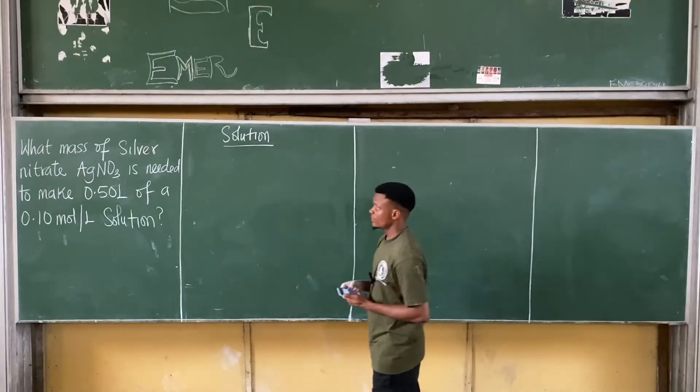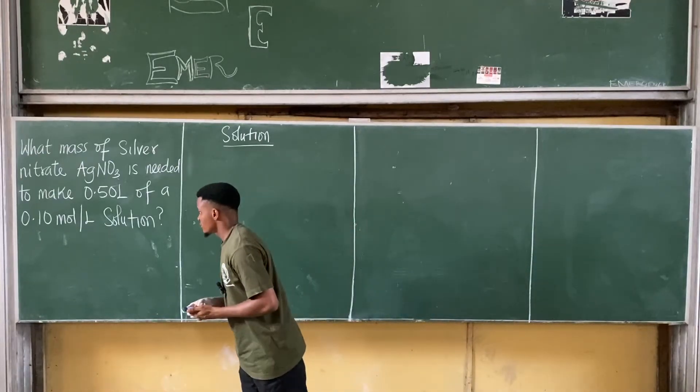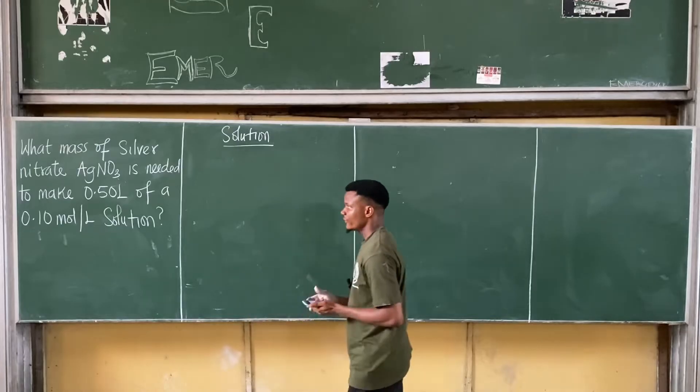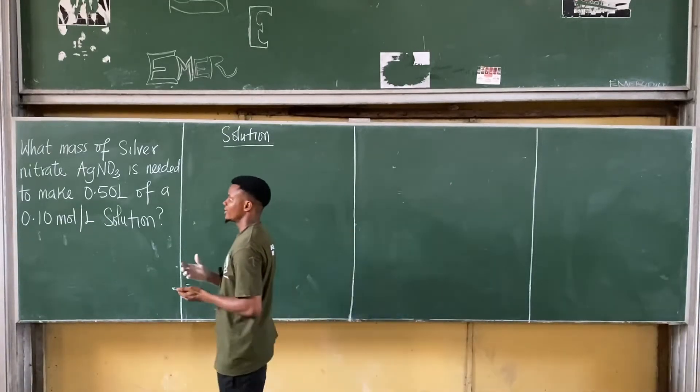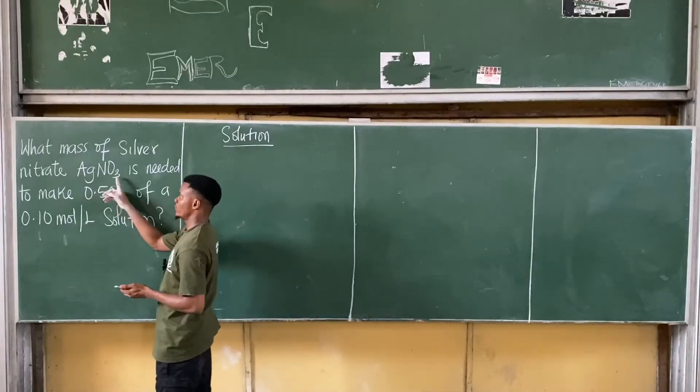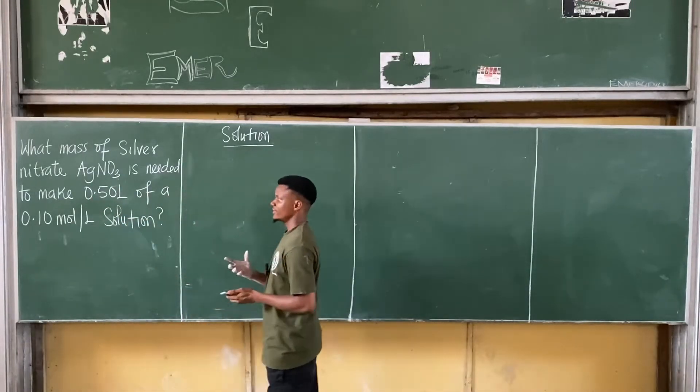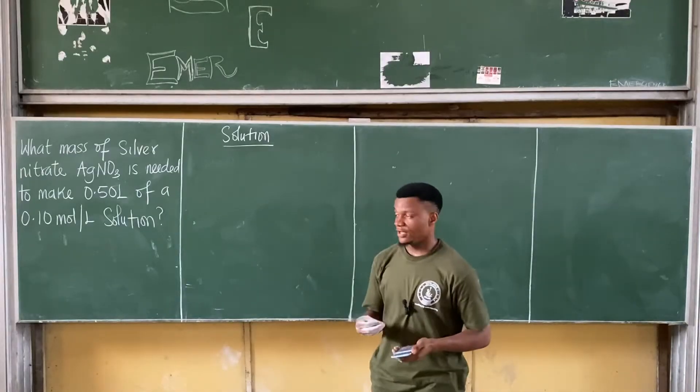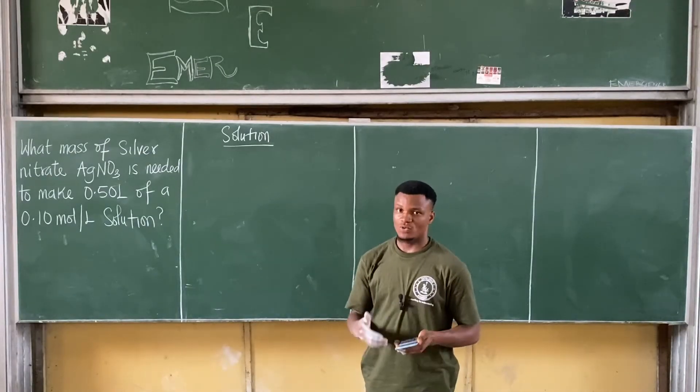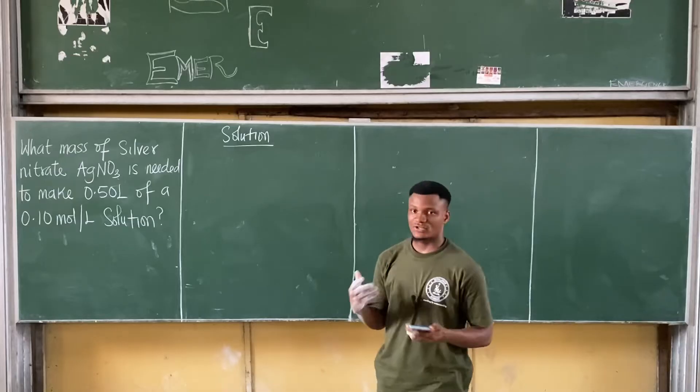Alright, let's look at this question. This question says, what mass of silver nitrate? Silver nitrate, the formula is AgNO3, is needed to make 0.50 litre of a 0.10 mole per litre solution.